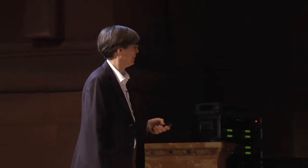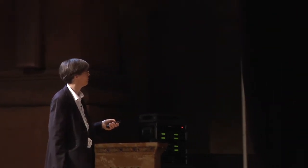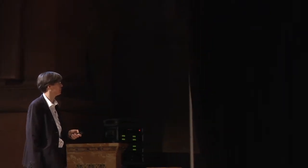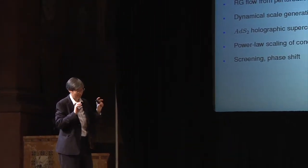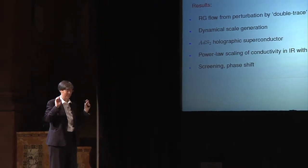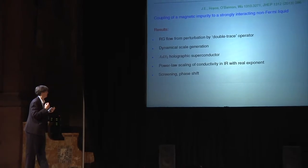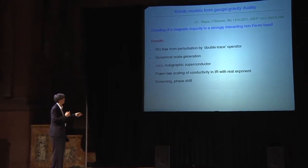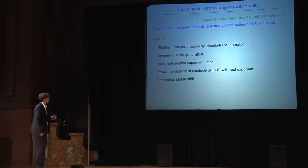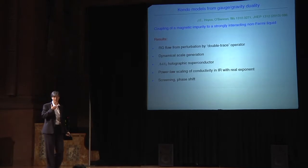We obtain our RG flow by perturbing with a so-called double-trace operator — in inverted commas because it's actually a product of two gauge-invariant operators made up of fundamental fields, so there are no traces, but nevertheless it's a product of two operators and we can use this double-trace approach. We also see this dynamical scale generation which is very important in the Kondo model and which makes this model similar to QCD.